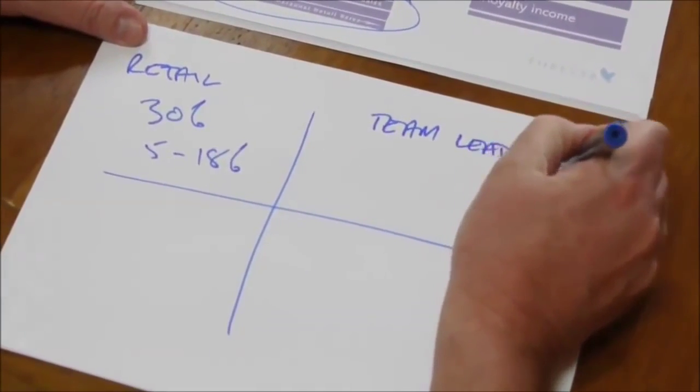In addition to the retail income — which is a combination of personal profit and personal bonus — we have team leading income. Team leading income is simply the difference between the personal bonus you're entitled to and the personal bonus somebody in your team is entitled to. For example, if you're an assistant manager and you sponsor somebody who's an assistant supervisor, you take their 5% from your 13%, giving you 8% on any assistant supervisors in your group.